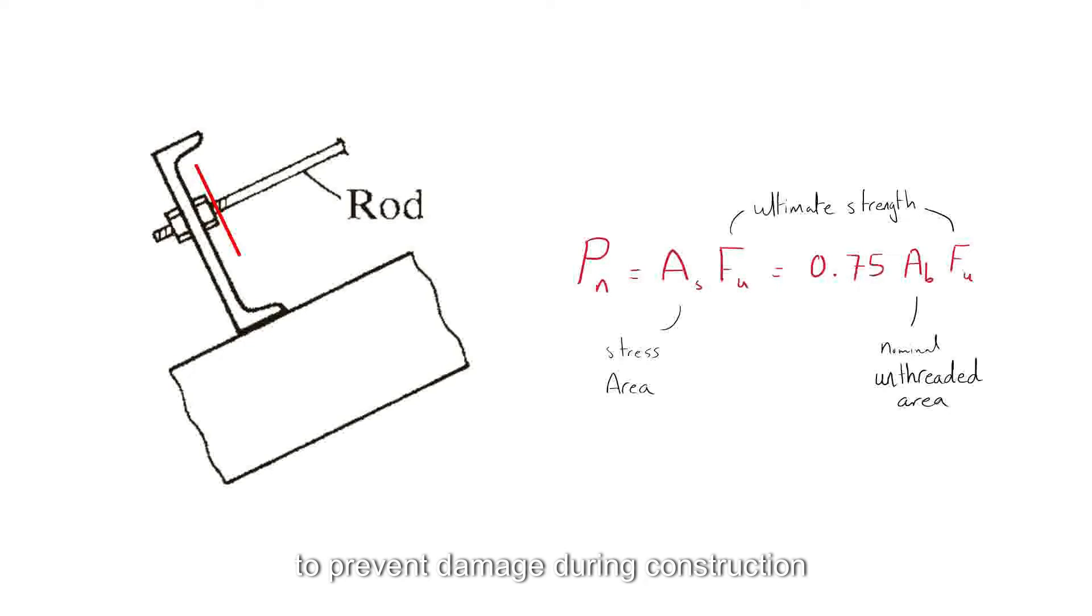To prevent damage during construction, rods should not be too slender. Although there is no specification requirement, a common practice is to use a minimum diameter of 5 over 8 inches.